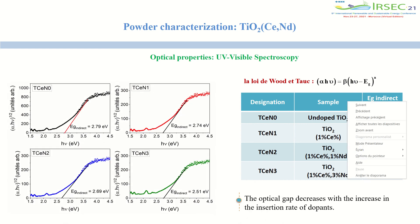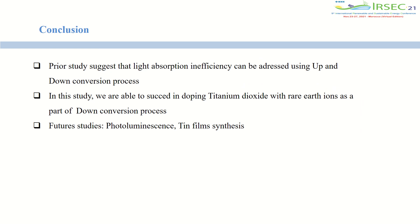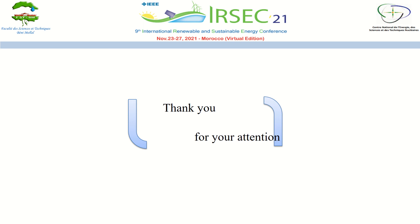In conclusion, prior studies suggest that light absorption inefficiency in solar cells can be addressed using up- and down-conversion. In this study, we show that we are able to succeed in doping Titanium Dioxide with rare earth ions as part of the down-conversion process. For future study, we must conduct photoluminescence analysis and then make thin film synthesis by spin coating technique, for example. Thank you for your attention.